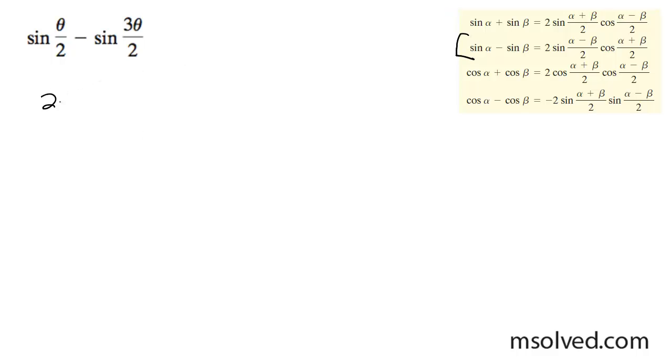We write this as 2 sine theta minus all over 2 times cosine. And then